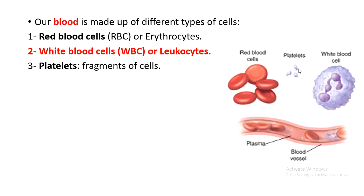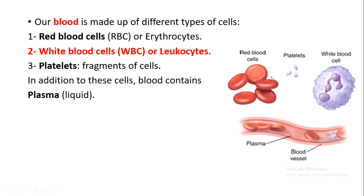So the blood is made up of three types of cells. In addition to these cells, blood contains plasma. So in the blood we have red blood cells, white blood cells, platelets, and a liquid called plasma. In the next activity we will talk about the function of plasma.